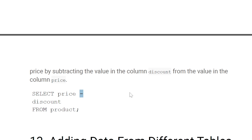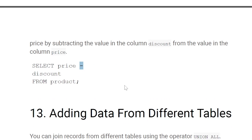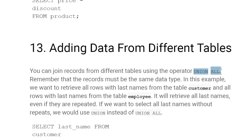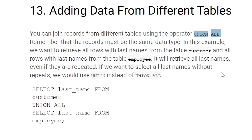Adding data from different tables: use UNION ALL or UNION. With UNION ALL, duplicate entries from different tables are also included. For example, SELECT last_name FROM customer UNION ALL SELECT last_name FROM employee — all last name entries from both the customer and employee tables appear in the result.